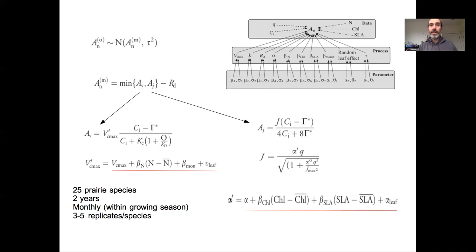On the rate of photosynthesis under light limiting conditions, we have an overall mean, we have a slope related to the chlorophyll concentration of the leaf, which makes sense because chlorophyll is related to light harvesting, and then we have this slope on a parameter called SLA, the specific leaf area, which essentially is telling us about the thickness of the leaves, and then we have again this random effect for individual leaf.